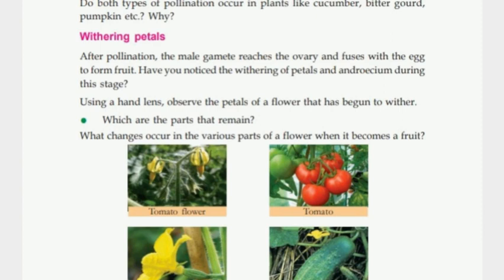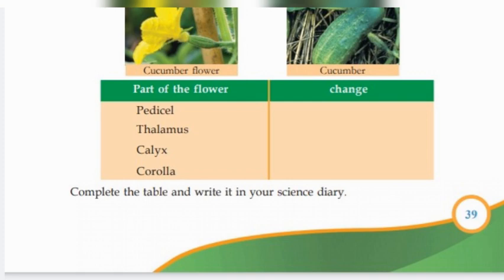This is how you can identify the pedicel. The pedicel becomes more strong. And what about the thalamus? The thalamus is strong. Calyx is strong as well.